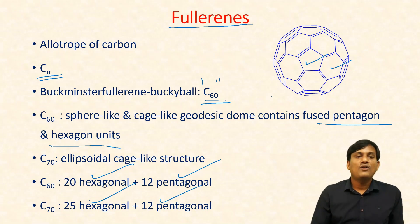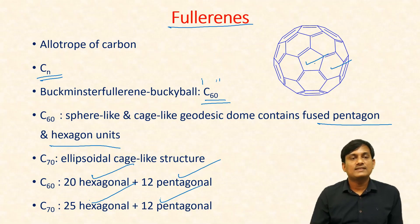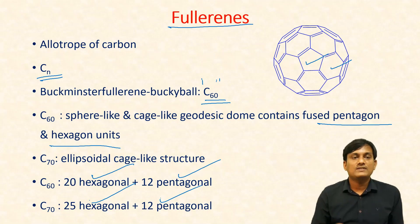In both C60 and C70, there are alternating double bonds and single bonds. There is a conjugation between double bond, single bond, double bond, single bond — a conjugation between the double bonds.